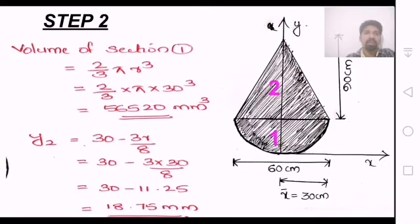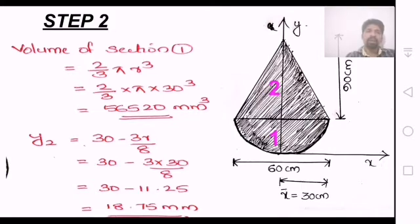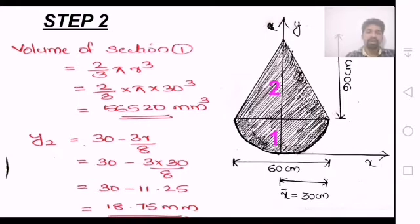In step 2, for the hemisphere section, the volume is 2 by 3 pi r cube, with r equal to 30. The y-distance from the top gives 3r by 8, so y2 equals 18.75 mm.